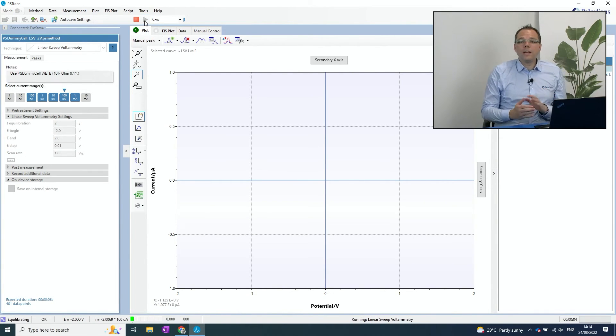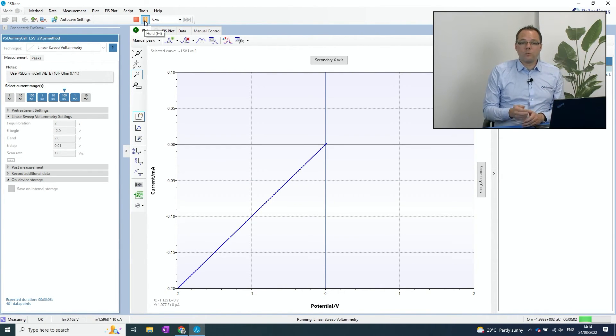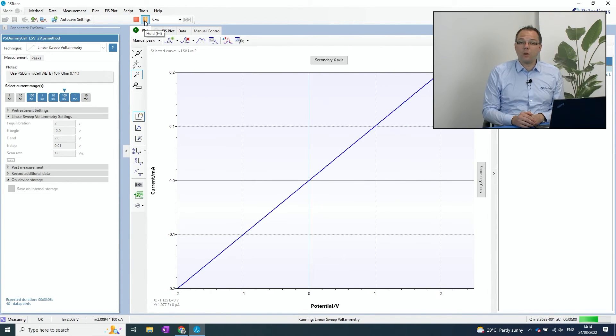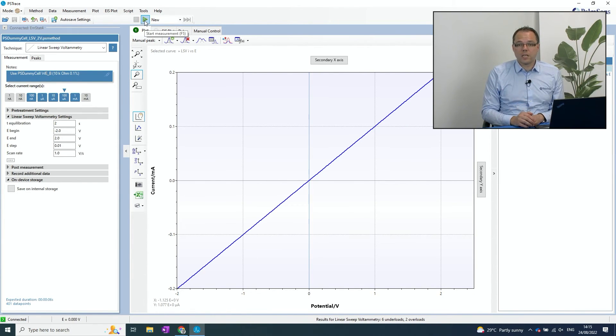So we're running a linear sweep voltammetry. We're sweeping the potential in a linear way and we have just a resistor connected. So according to Ohm's law, we're expecting a diagonal line in the graph of current versus potential and this is exactly what we see here. So just within a few minutes, we've not only unboxed the Emstat 4R, but already done our first measurement.